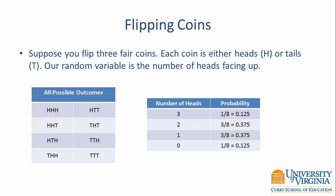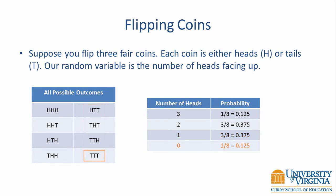But we're interested in not each individual permutation, but the number of heads. For example, the number of ways of obtaining three heads is 1/8th because there's only one permutation that gives us three heads. The number of ways of obtaining two heads is 3/8ths because there are three different ways of getting two heads and a tail, giving us 1/8th plus 1/8th plus 1/8th, which equals 3/8ths. Similarly, there are three ways of obtaining one head, giving 3/8ths. Finally, there's only one way of obtaining no heads, so that probability is 1/8th.